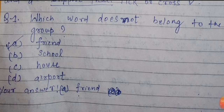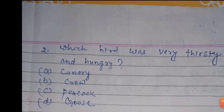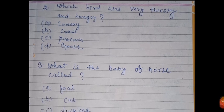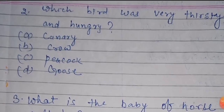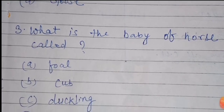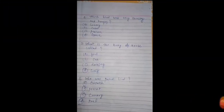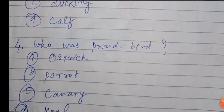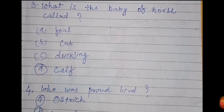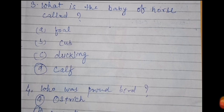Question number two: which bird was really thirsty and hungry? Option A: Canary. Option B: Crow. Option C: Peacock. Option D: Goose. Suppose your answer is number A — you will tick number A, you will choose number A. And that is your right answer.